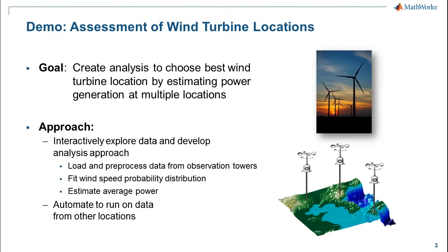So let's get into the example. The example we're going to use today is on creating an automated analysis routine using MATLAB to choose the best location to build a wind turbine based on measurement data acquired from multiple locations. This is from the wind energy industry. These wind turbines are pretty large and very expensive to build, so before they build one, they need to first find the ideal location by taking measurements at various sites — measuring wind speed and temperature — to estimate how much power they'll be able to generate. We want to develop a program that would read in those multiple files, do those calculations, and identify the best location.